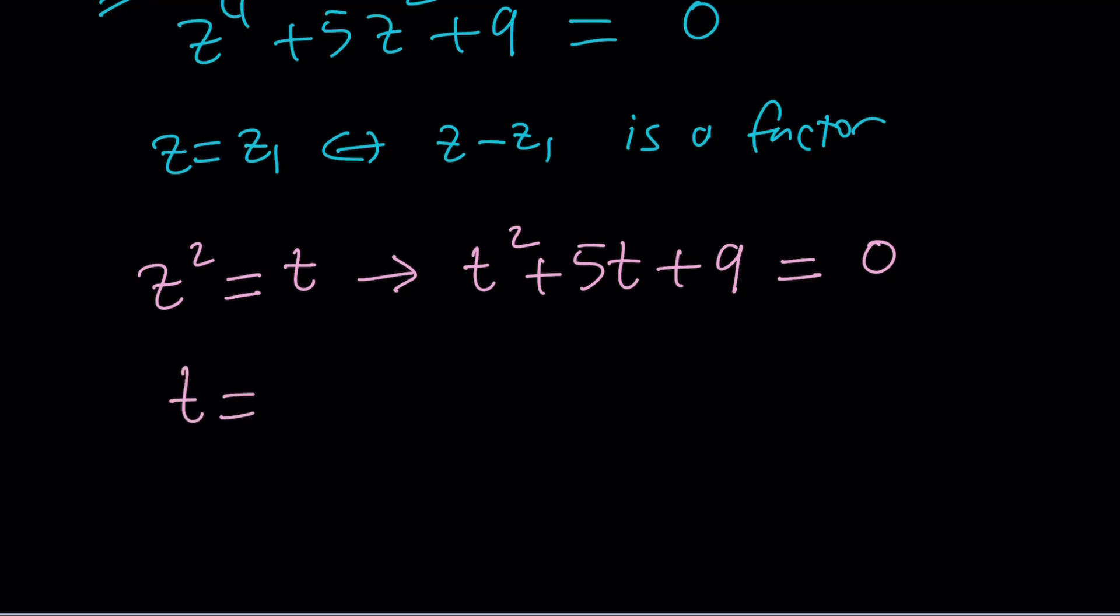t equals negative b plus minus the square root of b squared, which is 25, minus 4 times 9, which is 36. 25 minus 36 is negative 11. This gives us square root of 11 times i, because square root of negative 11 can be written as square root of 11 times i, divided by 2a, which is 2.